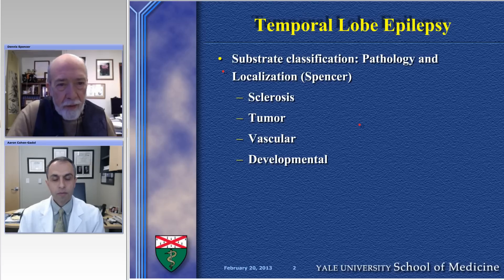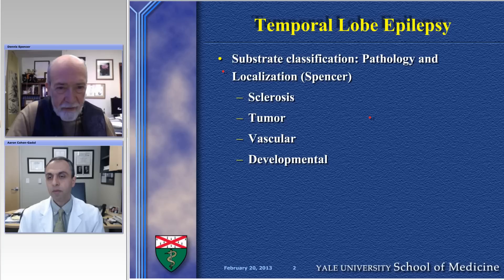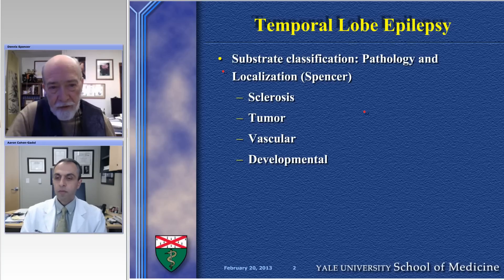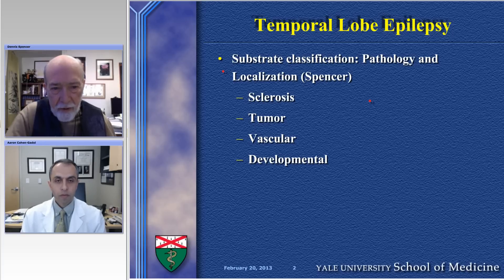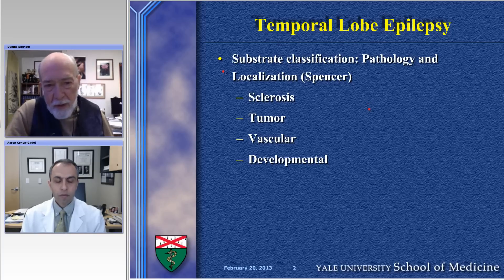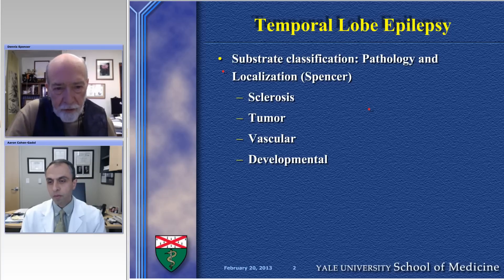As you know, I'm a big fan of trying to morphologically classify the epilepsies, and that has evolved, as we'll see a little bit later, into a classification that involves the networks aside from the substrates. Using the substrate classification, what we mean by that is the seizure type plus the pathological and anatomical localization. It really helps us understand how we should approach the patient and how they're going to fall into categories that are more or less responsive to surgical treatment.